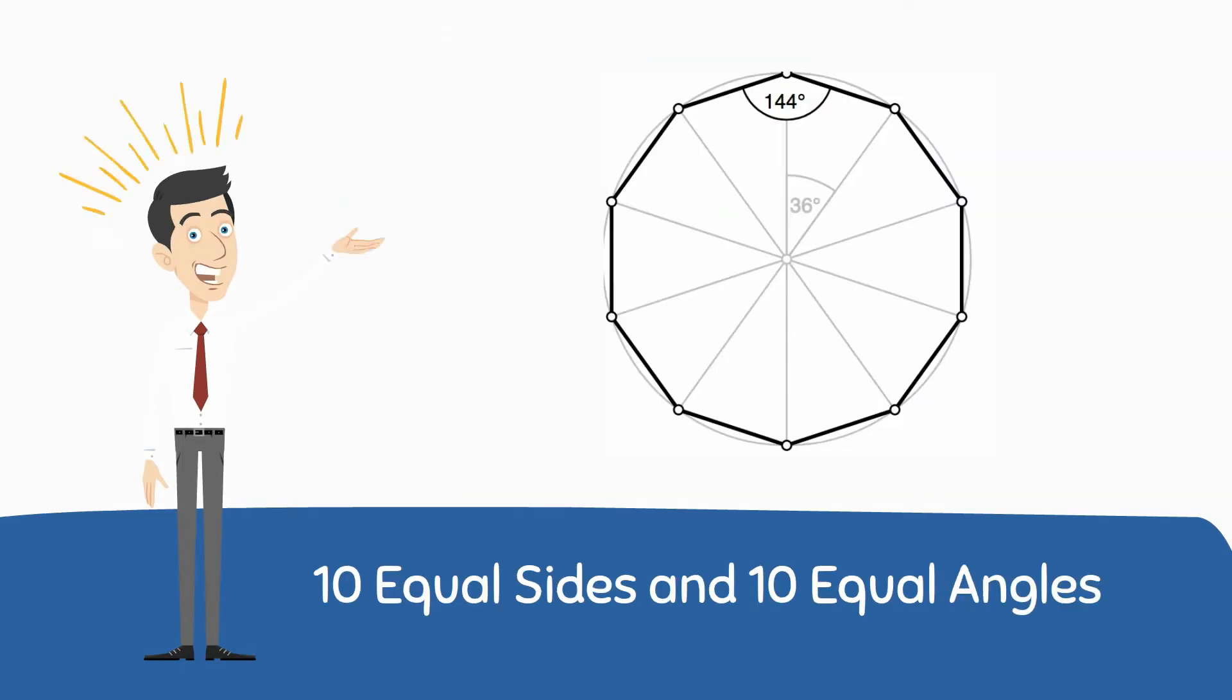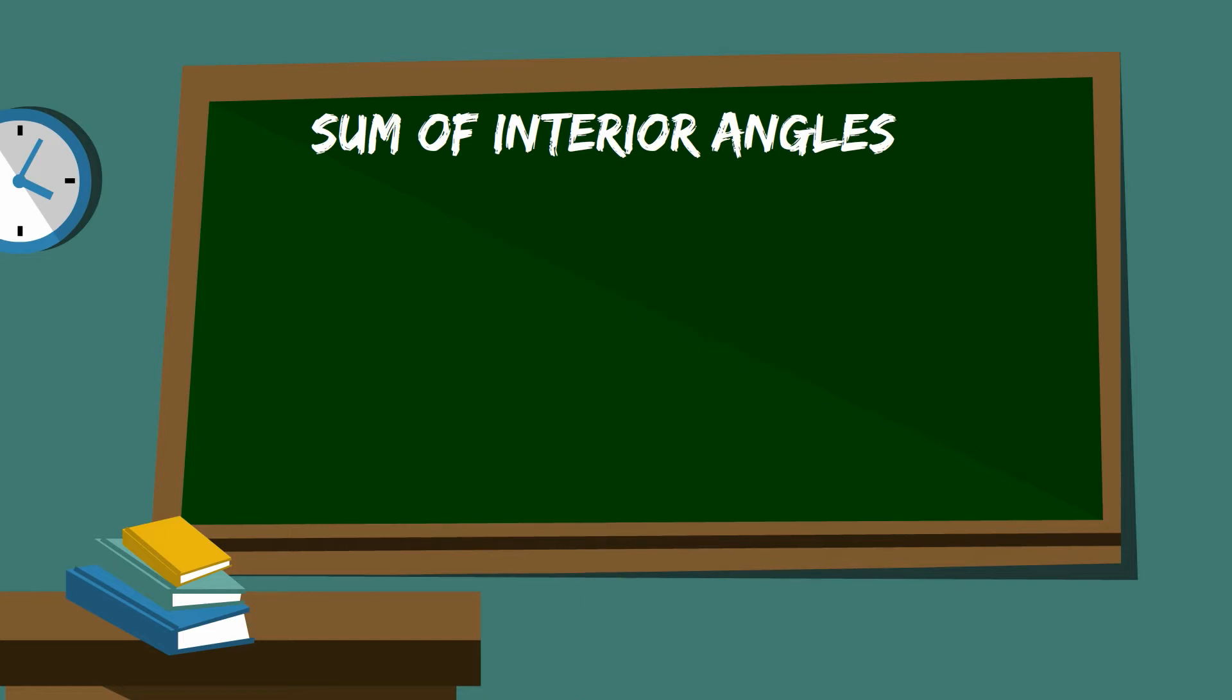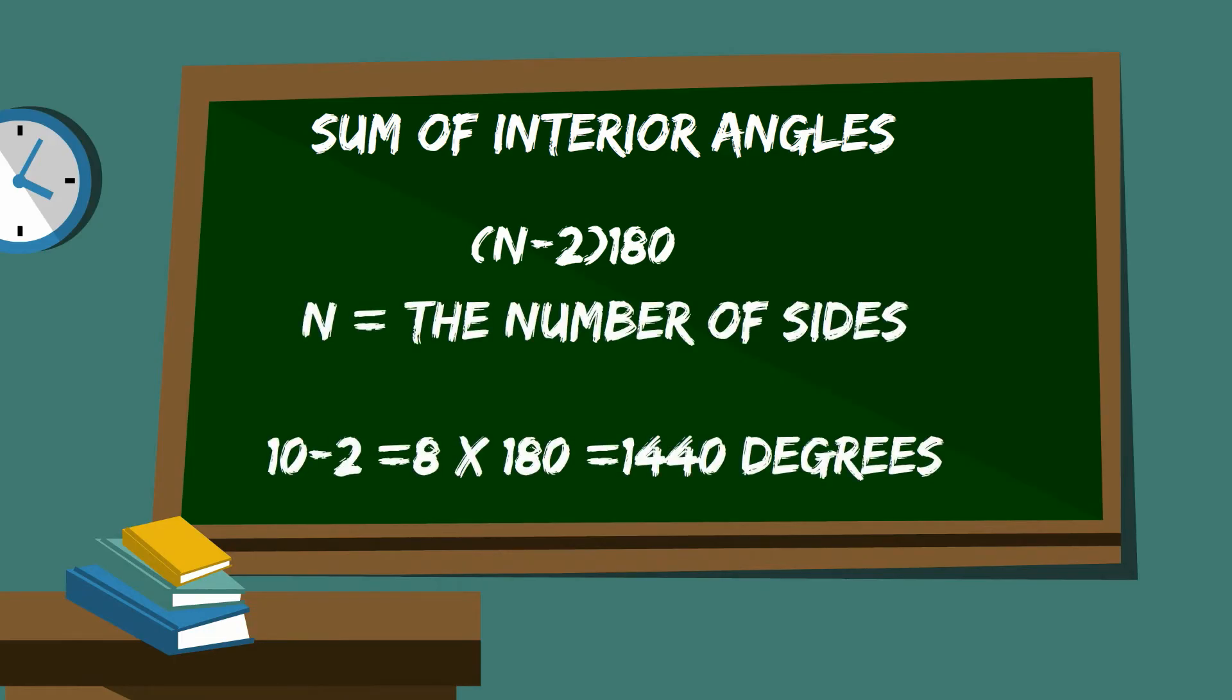A regular decagon has ten equal sides and ten equal angles. The formula for the sum of all interior angles of a polygon equals n minus 2 times 180, and n equals the number of sides. If you do the math you get 1440 degrees.